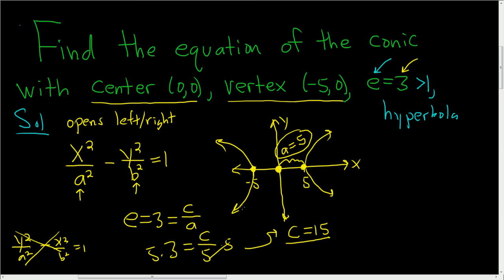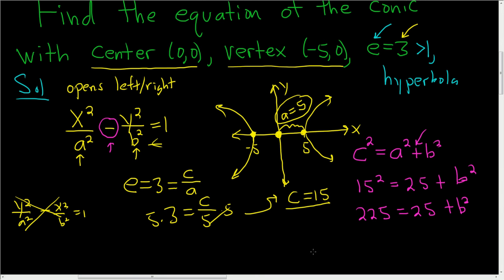Now we have c. We still don't have b. So what we will do is use an equation that relates a, b, and c. It's c² = a². And the trick to figure out the sign here is that it's always the opposite of whatever you see here. So this is a minus, that makes this a plus. And then we have our b². c was 15, so we get 15 squared. a is 5, so we get 25 + b². And 15 squared is 225. Here we have 25, and then plus b². Subtracting 25, we end up with b² equal to 200.